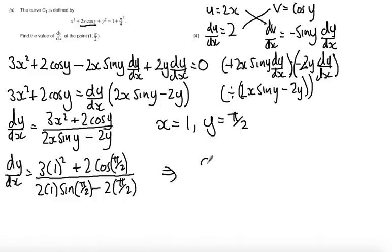So just tidying this up now, dy/dx is equal to—I get 3 times 1 which is 3, I get 2 times cos of π/2. Cos of π/2 is 0, so on the numerator I get 3 plus 0 which is 3. And then in the denominator I get 2 times sin of π/2, sin of π/2 is 1, so I get 2 times 1 is 2. And then minus 2 times π/2 will just leave me with π. At that point I'm just going to leave it as an exact value.